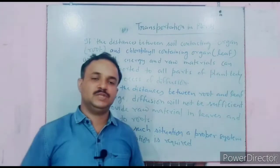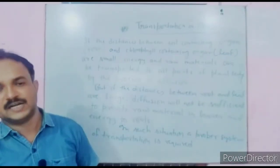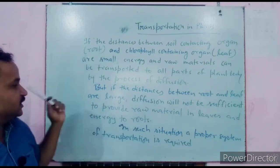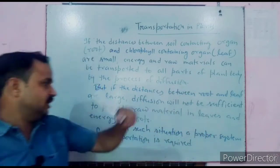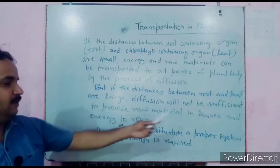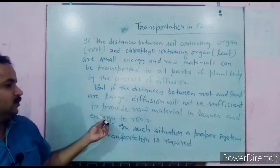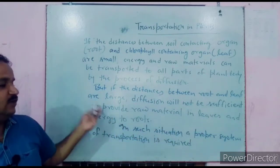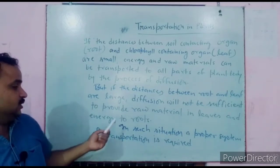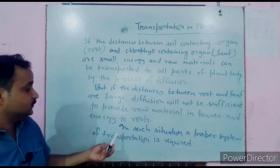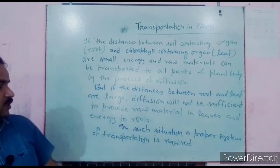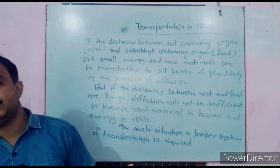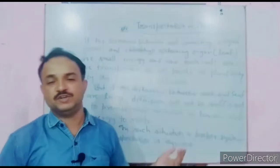If the distance between root and leaf is large, diffusion is not sufficient to provide raw material to the leaves or energy to the root. In such a situation, a well-developed transport system is required, which is achieved by the vascular tissue — xylem and phloem.